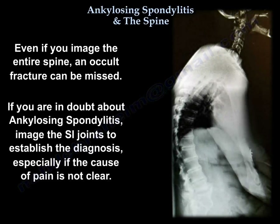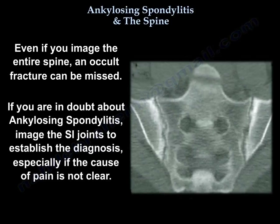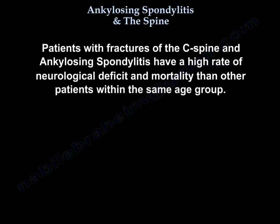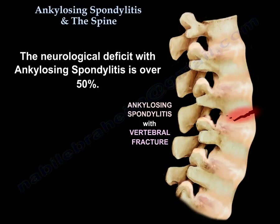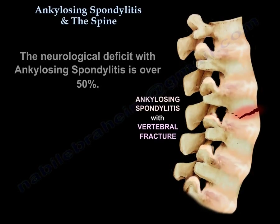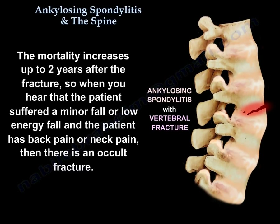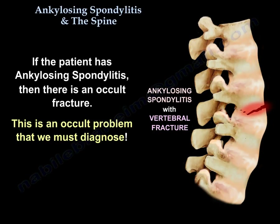Even if you image the entire spine, an occult fracture can be easily missed. If you are in doubt about ankylosing spondylitis, image the SI joints to establish the diagnosis, especially if the cause of pain is not clear. Patients with C-spine fractures and ankylosing spondylitis have a higher rate of neurological deficit and mortality than other patients in the same age group. The neurological deficit rate with ankylosing spondylitis is over 50%, and mortality increases up to 2 years after the fracture. When you hear of a minor or low-energy fall with back pain in a patient with ankylosing spondylitis, assume there is an occult fracture — this is a problem we must diagnose.